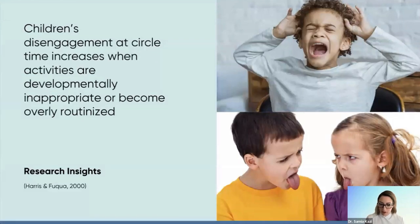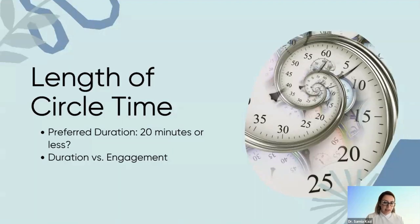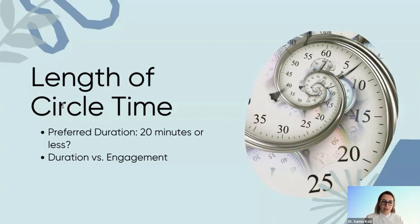We talked about calendar work and choosing developmentally appropriate activities. Now let's talk about the length of circle time. Some people find 15 minutes is enough; others spend 40 minutes doing circle time focused on calendar activities, rote memorization, and class rules. Research done by Wilts and Klein in 2001 found that children who disliked circle time were associated with classrooms that did longer sessions. So be mindful not only of developmental appropriateness, but also of the length of time you're spending during circle time.